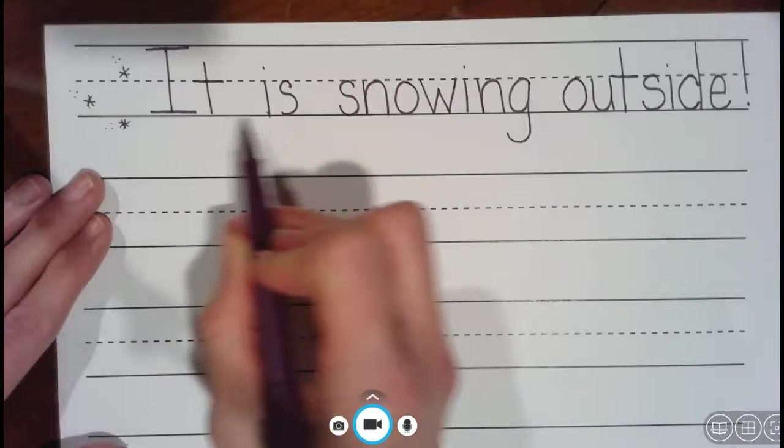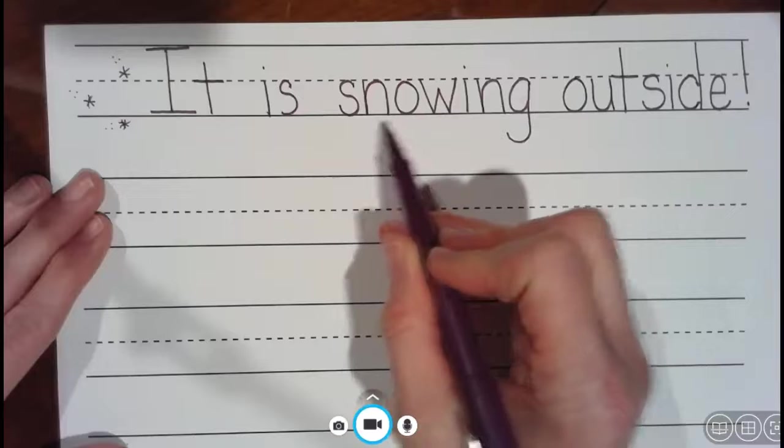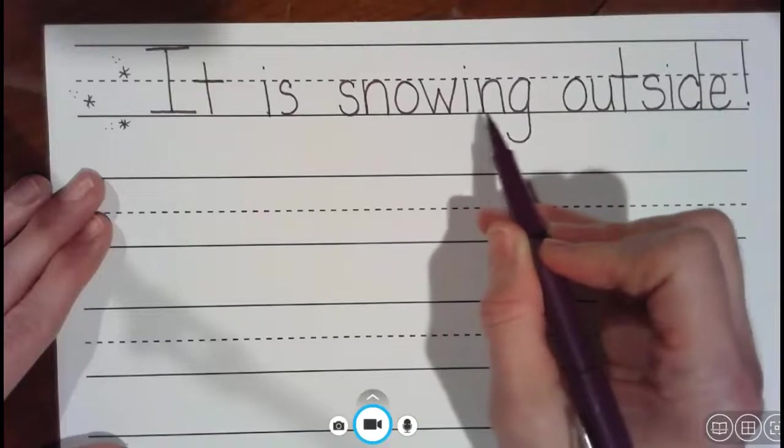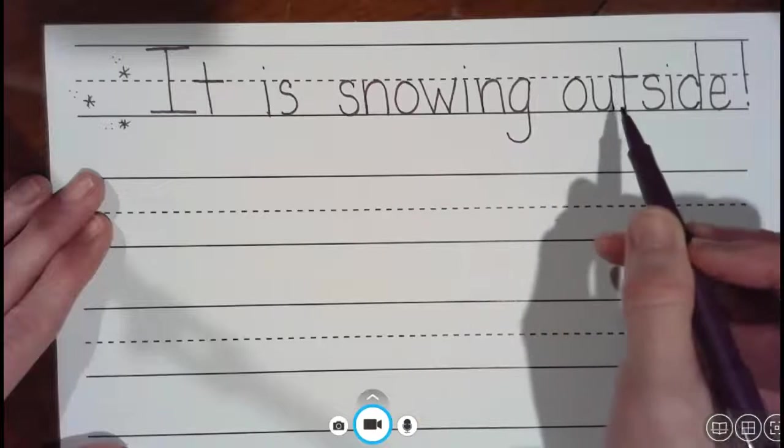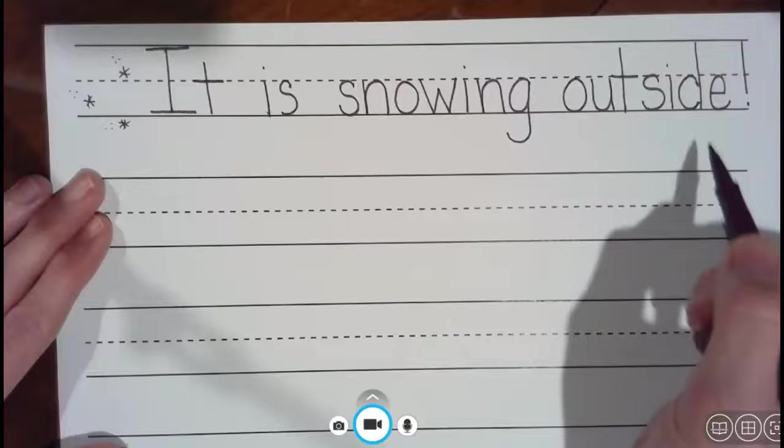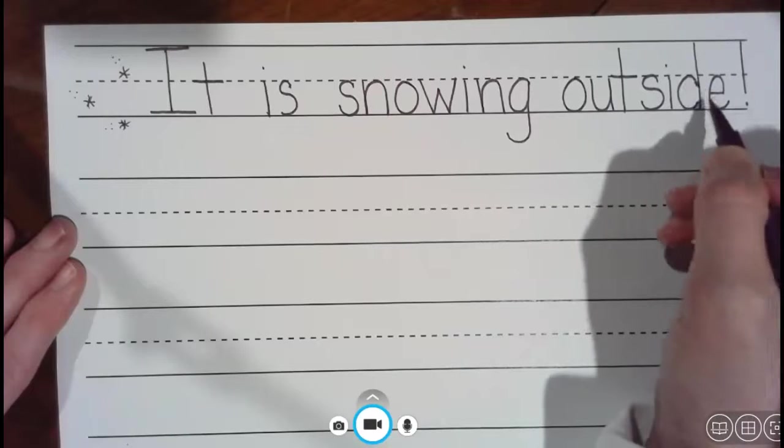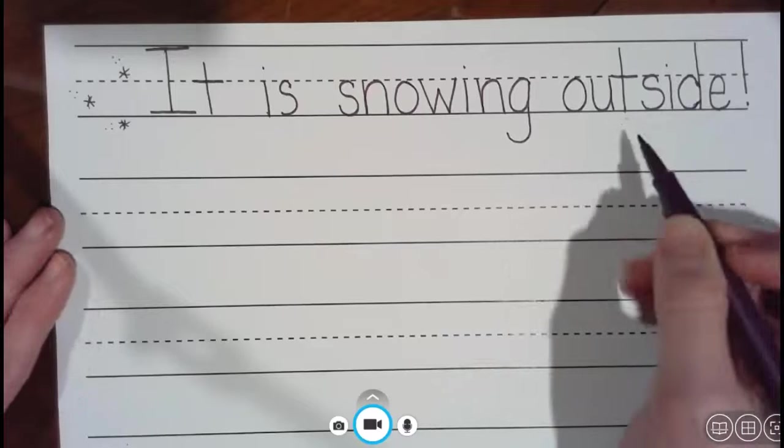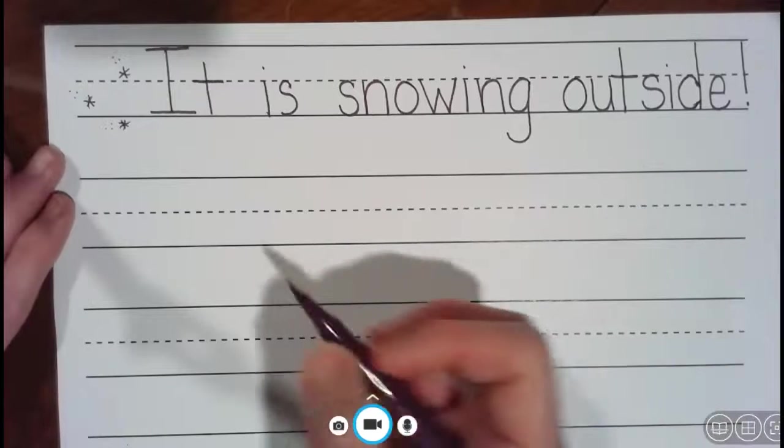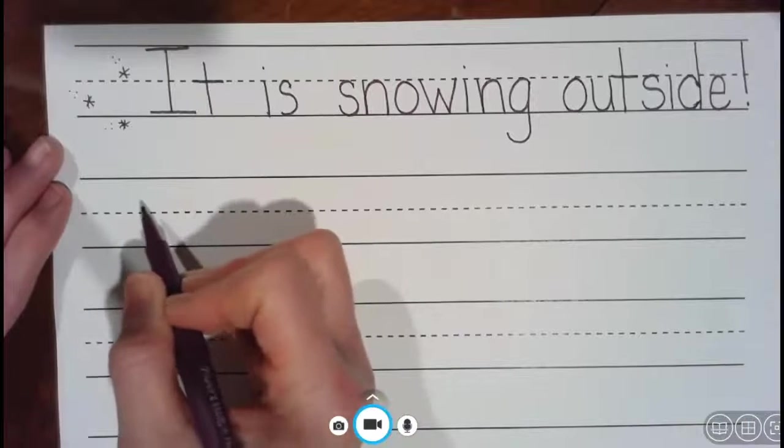All right, it is snowing outside, so we practiced a capital I and a lowercase I, a T and an S, and then a W, and then again a G, a U, a D. Look at all those letters we practiced in just one sentence. All right, that D is terrible. Don't make your D look like my D.